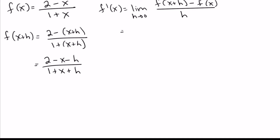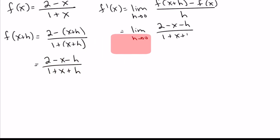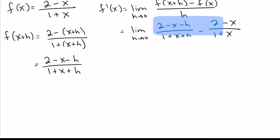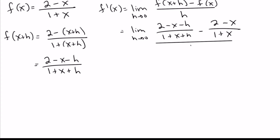We plug that into the formula. We get (2 minus x minus h) over (1 plus x plus h) for the f of x plus h part. Remember, f of x is just what we started with in the first place — nothing special there. And all of this still has the h on the bottom.